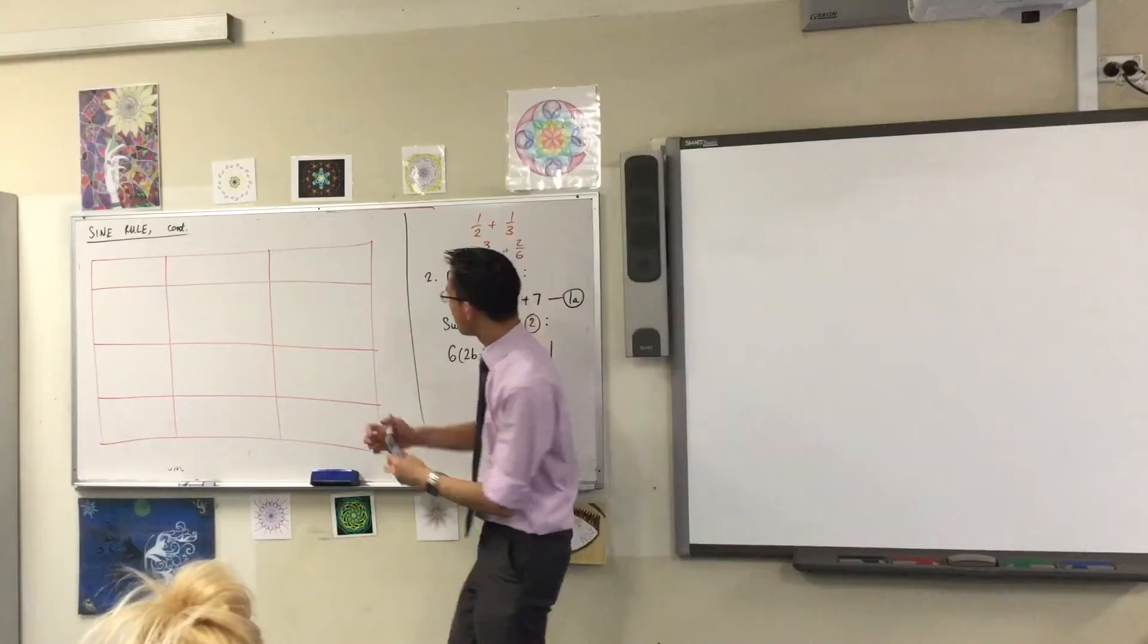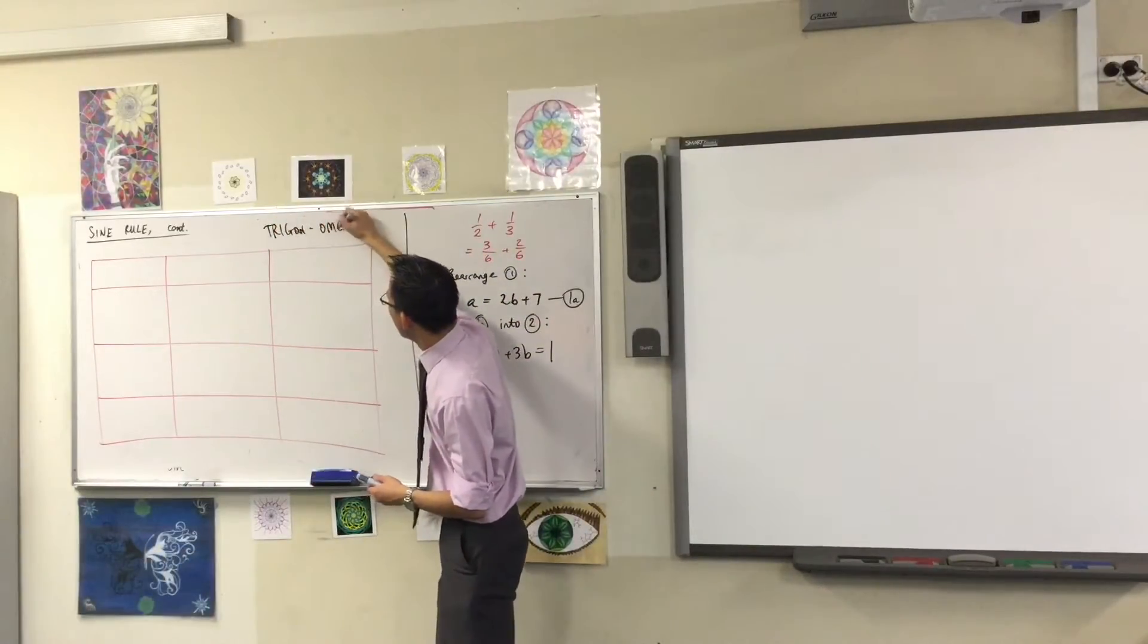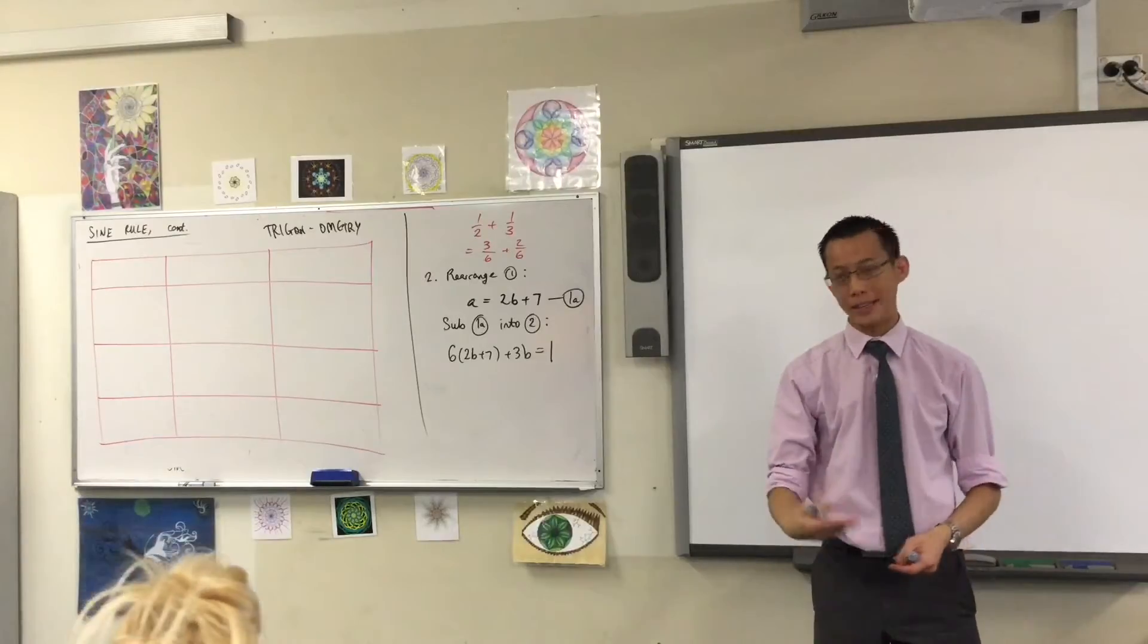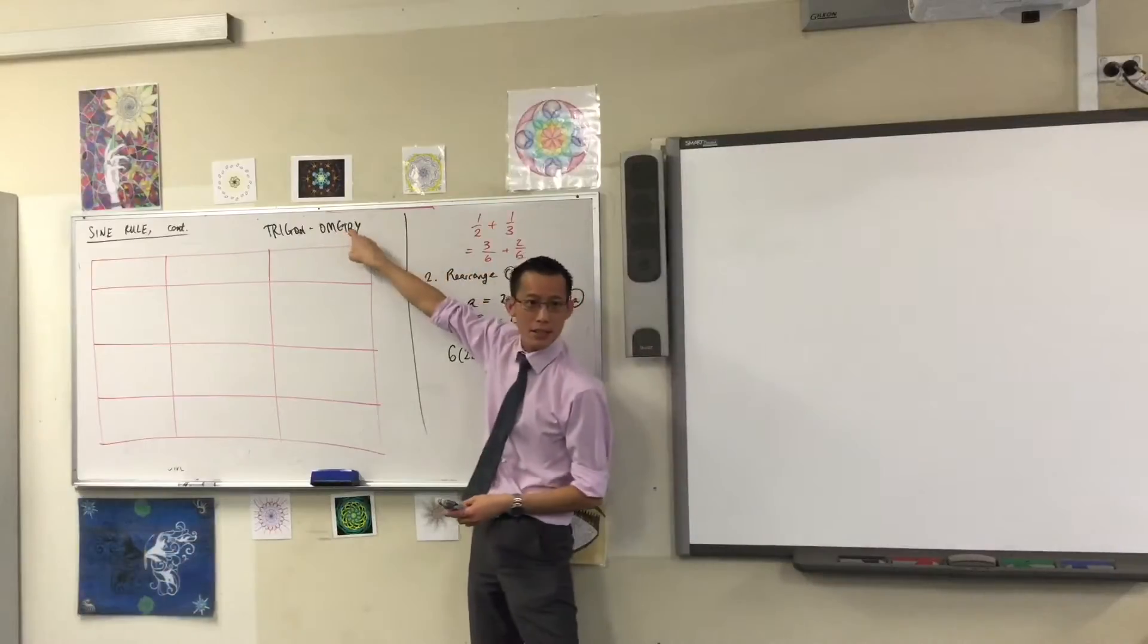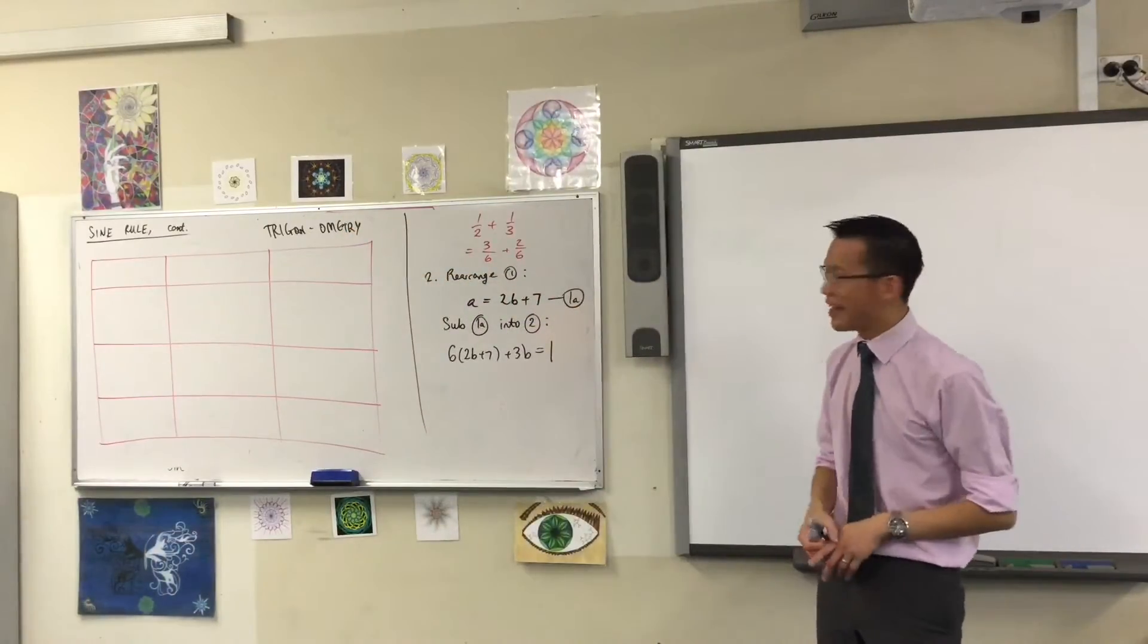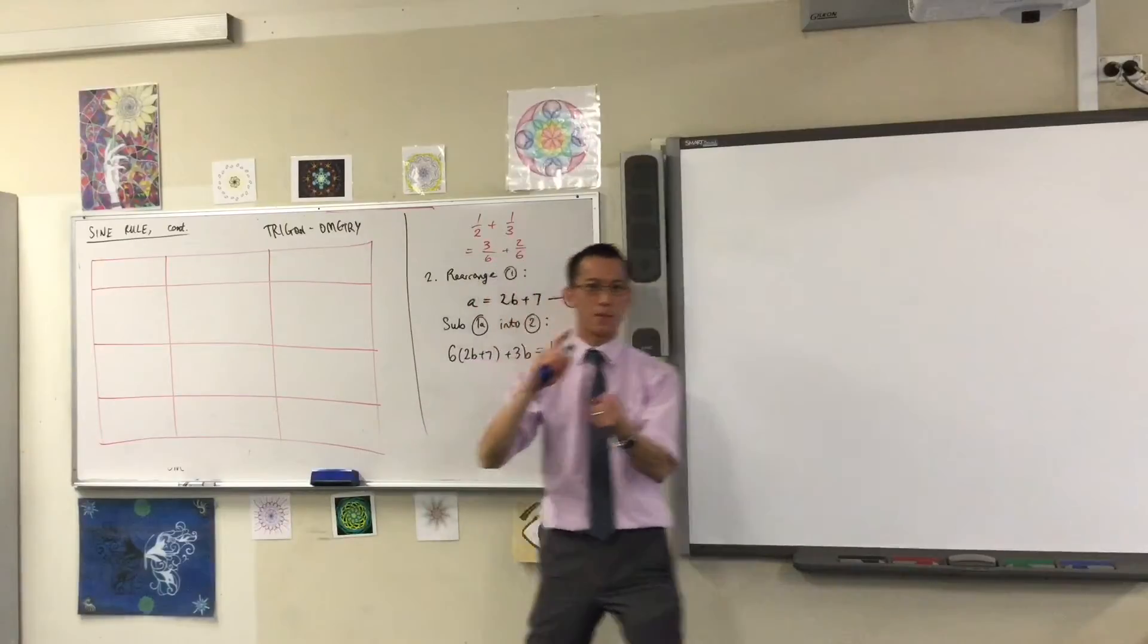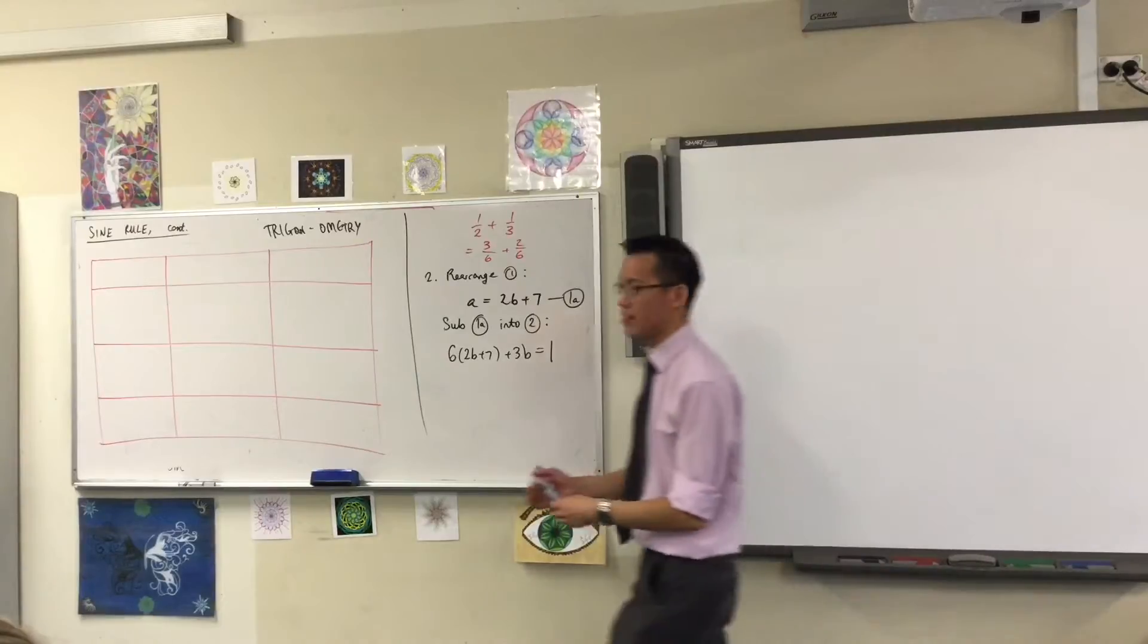This is trigonometry, right? The word trigonometry kind of tells you what it's about. When you've got something with metric on the end, like optometry or geometry, does anyone know what that metric bit means? It's the metric system, which is another way of saying measurement.